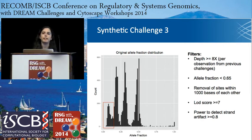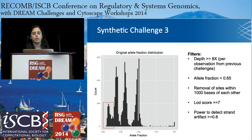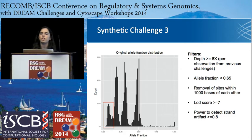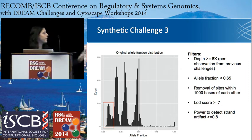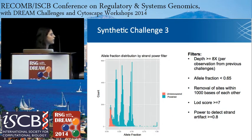We also reduced our LOD score threshold down to 7 from 10, because now we're calling in low allele fraction regions. We also changed one of our filters — the power to detect strand artifact — which tests that reads supporting the alternate allele are equally balanced between forward and reverse directions. Normally we use 90% confidence to detect that balance; we reduced that power down to 80%, allowing this filter to be more stringent. Lowering it from 0.9 to 0.8, many of the underpowered events were in these low allele fraction regions and appeared to cover what we hypothesized to be a false positive distribution.